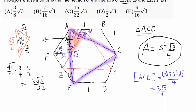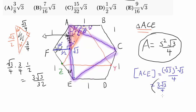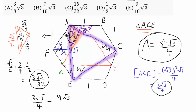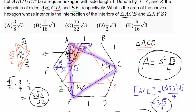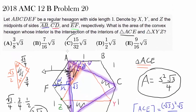Now we are basically done. We start with the area of triangle ACE: 3√3/4. We subtract 3 times the small triangle area: 3 × 3√3/32 = 9√3/32. Using a common denominator of 32: 24√3/32 minus 9√3/32 equals 15√3/32. This is precisely answer choice C.